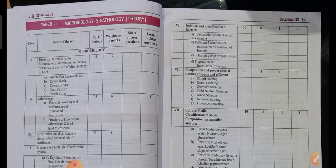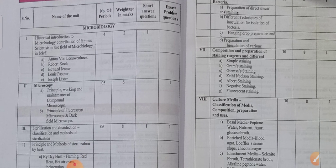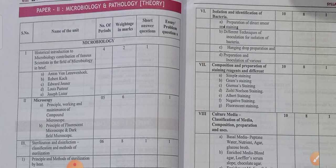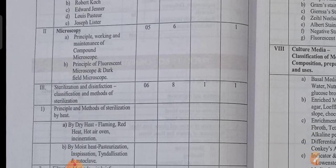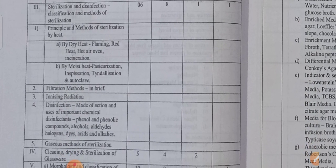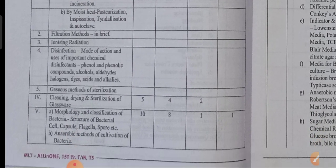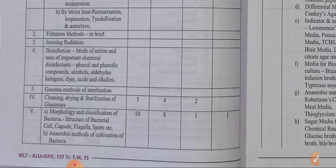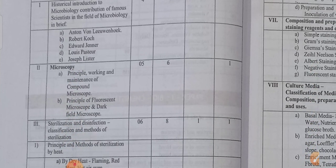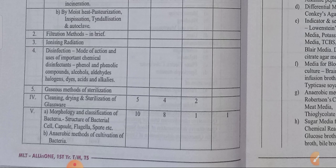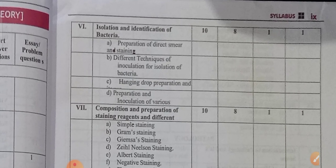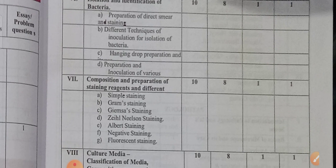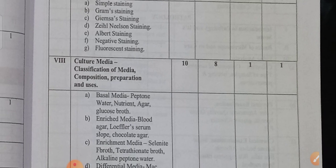Second subject — Microbiology and Pathology syllabus and blueprint. Historical microbiology — first unit, two marks important. Microscopy reports — 6 marks weightage. Ionizing radiation, disinfection, gases, methods, cleaning, drying, sterilization of glassware. Morphology and classification of bacteria — also an important chapter. Microscopy important, sterilization important, cleaning, drying, sterilization of glassware, morphology — also very very important. Next, isolation and identification of bacteria — 8 marks weightage.